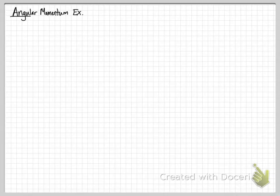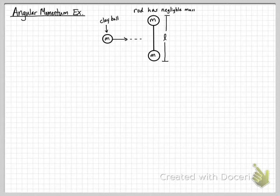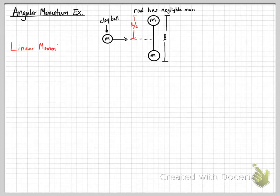We're going to look at an angular momentum example. We have a dumbbell with mass m on each end, and the rod has negligible mass with length l. We're going to have a clay ball with mass m and send it toward the dumbbell. There are two ways we need to think about this: in terms of linear momentum p and angular momentum l.